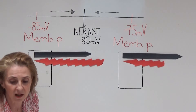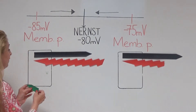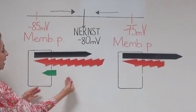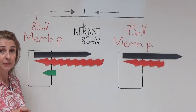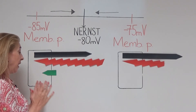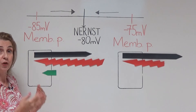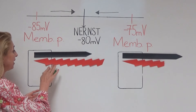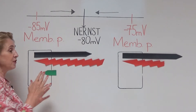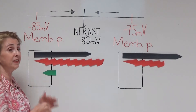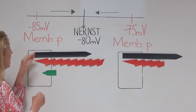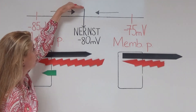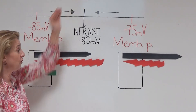The net electrochemical driving force is 5 millivolts, pushing potassium into the cell. When potassium enters the cell, it carries positive charges that will neutralize some of the negativity inside the cell. When negativity decreases, the cell's membrane potential will move towards the Nernst potential of potassium.